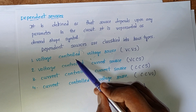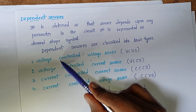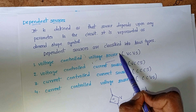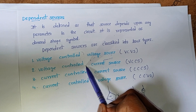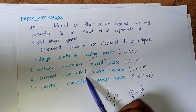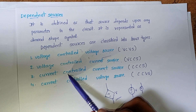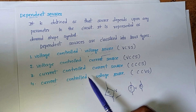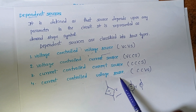In a voltage controlled voltage source, the voltage at a particular element controls the voltage source value. In a voltage controlled current source, the voltage at a particular element in the circuit controls the current source. In a current controlled current source, the current in a particular branch controls the current source. In a current controlled voltage source, the current in a particular branch or element controls the voltage source of the circuit.